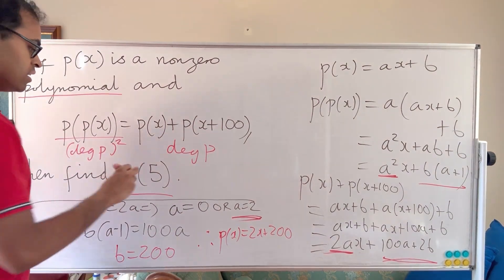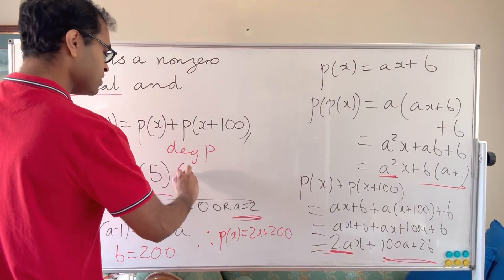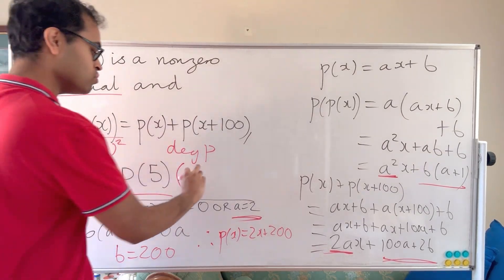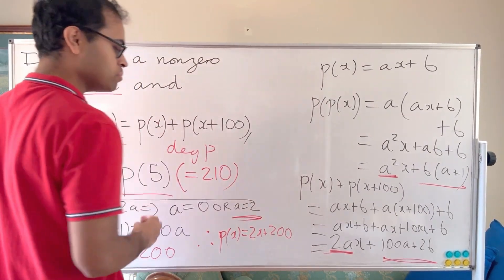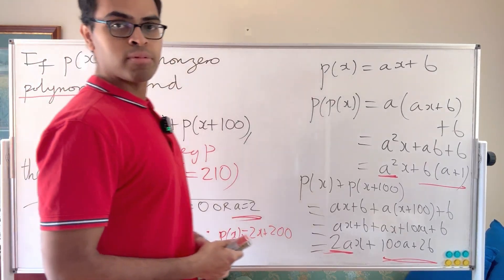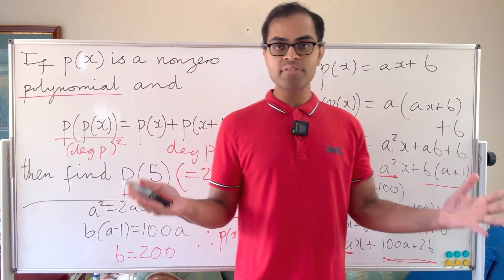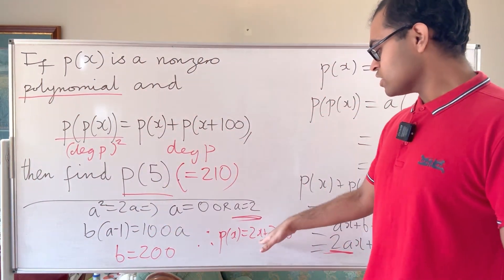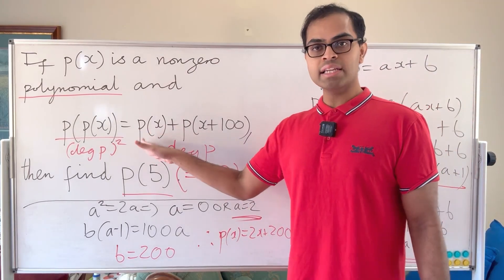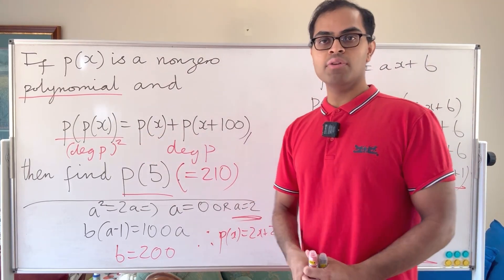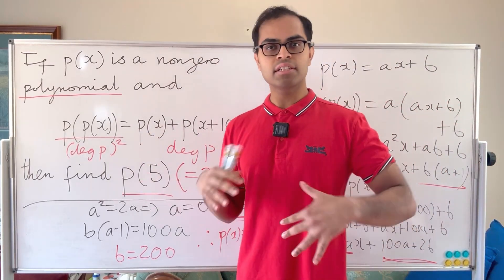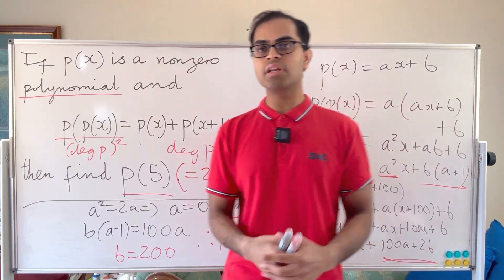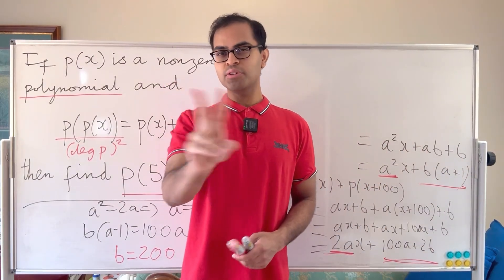So p(5) = 2(5) + 200 = 210. That's a pretty cool problem! I encourage you to verify that 2x + 200 really satisfies the functional equation, just to practice checking the answer and get a sense of what was going on in this video.